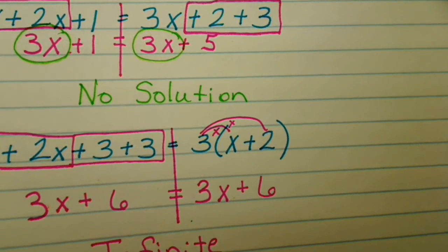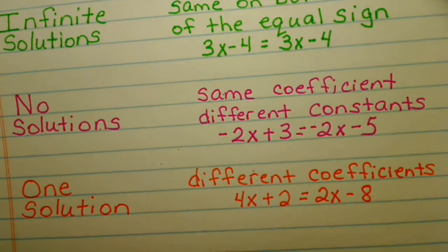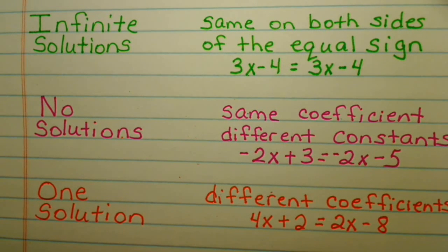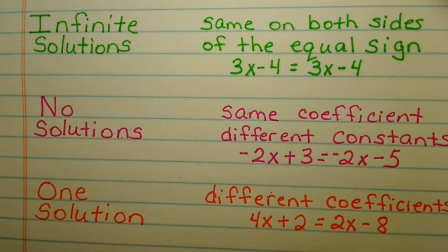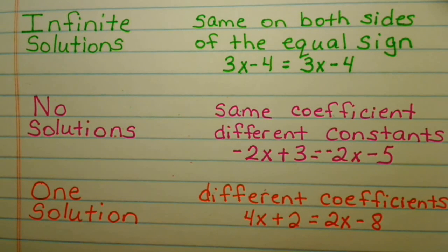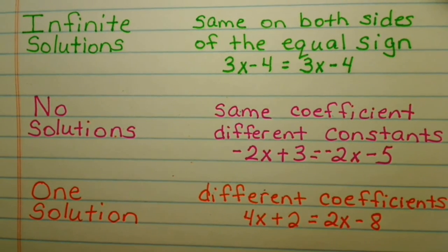To review the three different types of solutions: we have infinite solutions when you end up with the same thing on both sides of the equal sign; no solution when you have the same coefficient but different constants; and one solution where you have different coefficients. Thank you, and remember to be kind.